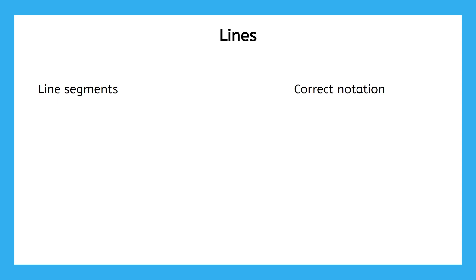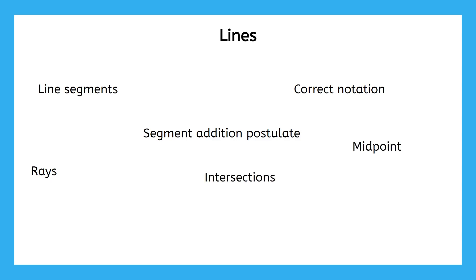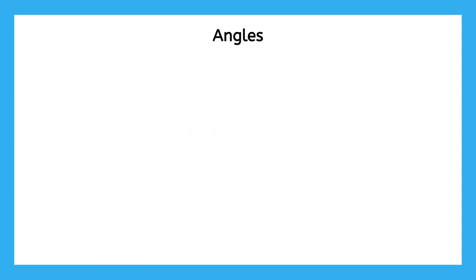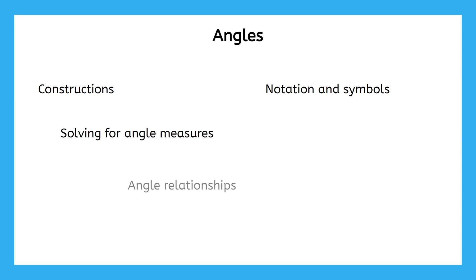So far in this unit, you've learned about a lot of topics related to lines, like line segments, and how to use notation when describing lines, and all sorts of other things you'll need to know and use throughout this course. The second overall topic for this unit is angles. We're gonna start by learning some constructions and notation and symbols related to angles, then work our way up to more recent topics such as solving for angle measures, angle relationships, and important vocabulary related to angles.